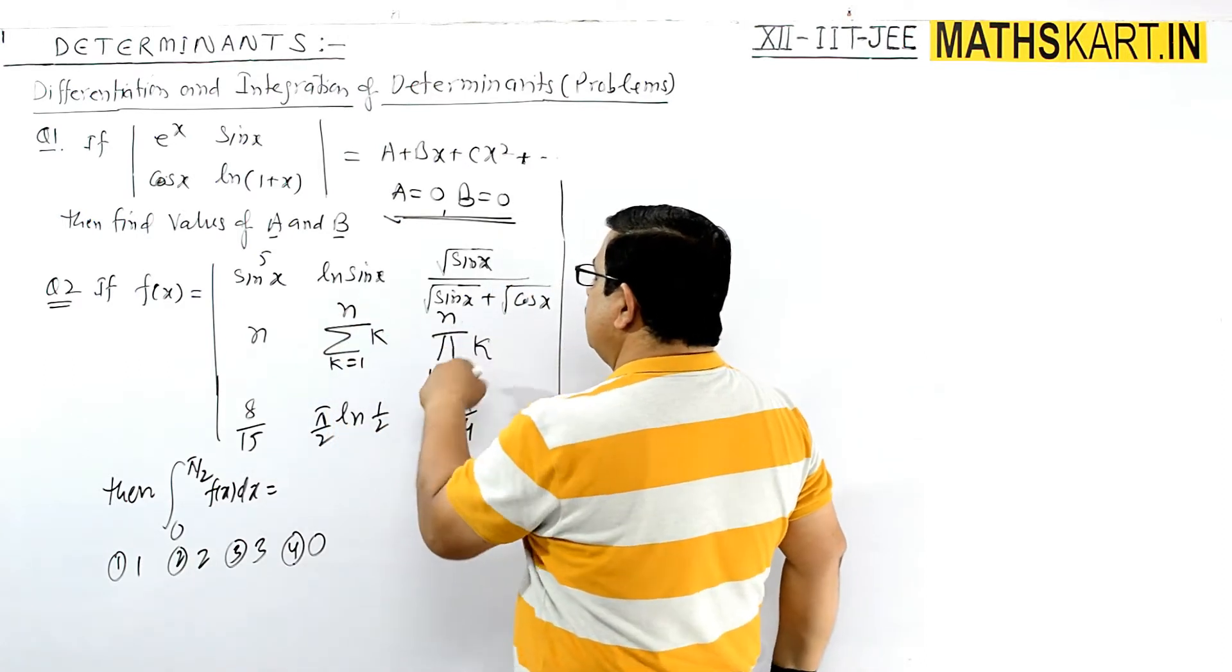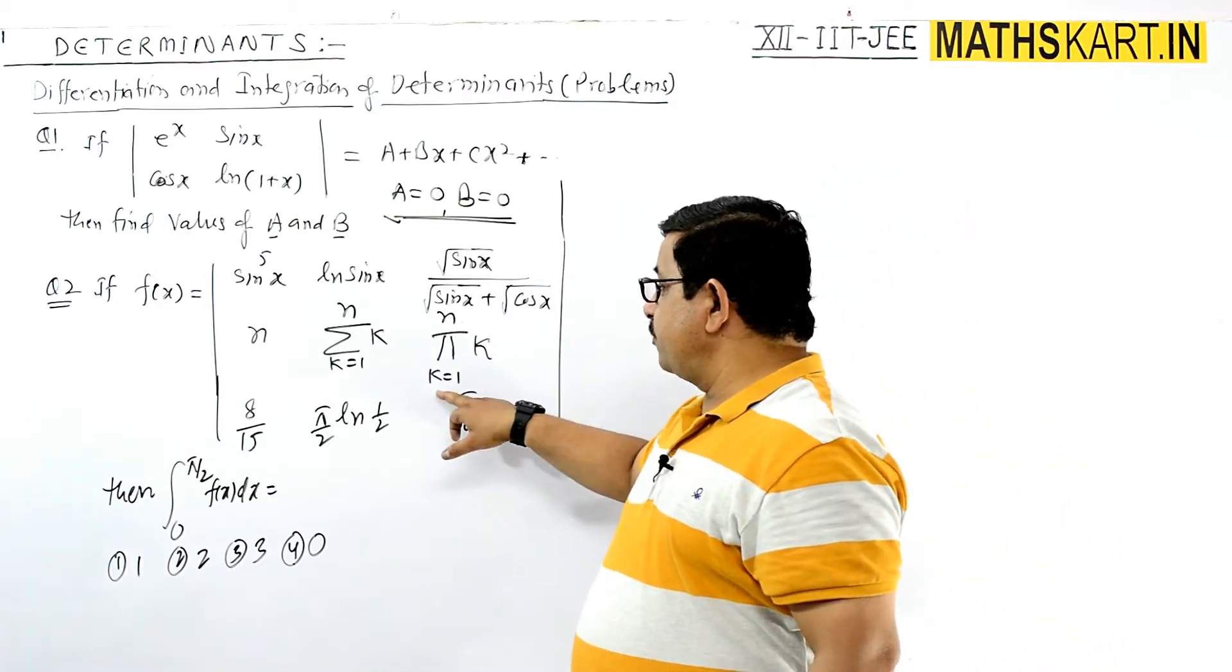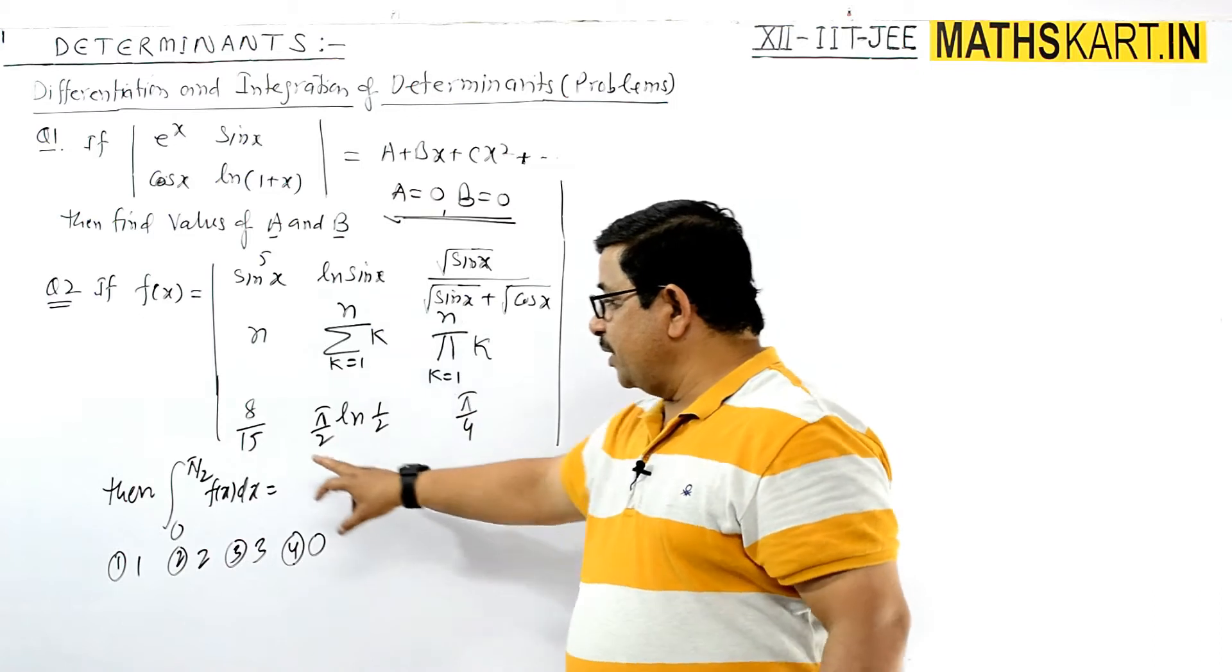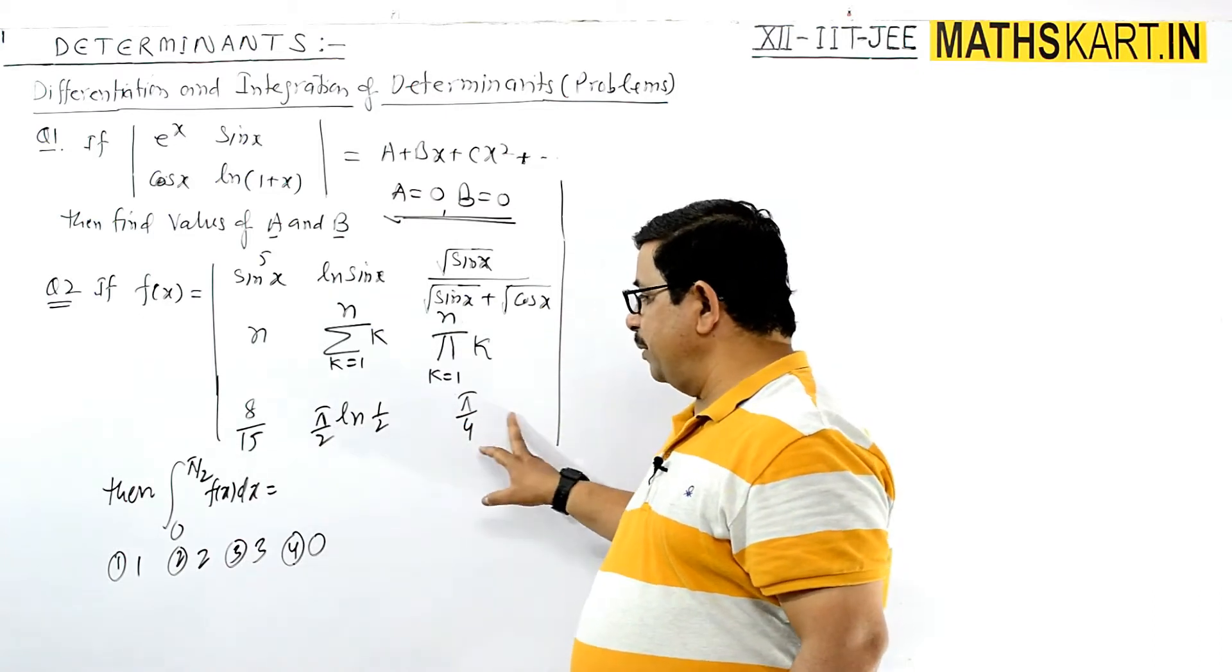And this is the greater pi sin, greater sin pi means product of n terms, k equals 1 to n is there. In the third row: 8 by 15, pi by 2 ln 1 by 2, pi by 4.